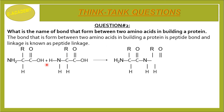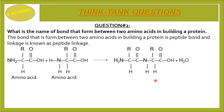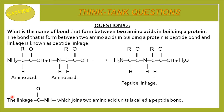When two amino acids come together to form a bond, water is removed as a byproduct — hydrogen leaves and forms water — and a bond is formed between carbon and nitrogen, which we call the peptide bond. The linkage — C double bond O, bond NH — which joins two amino acid units is called a peptide bond.